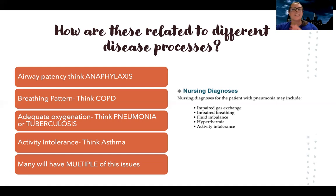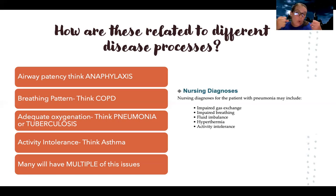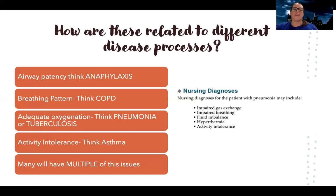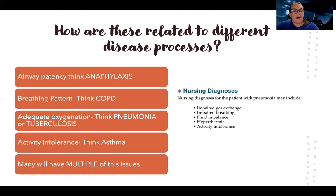Breaking it down: for airway patency, think anaphylaxis — that closed, constricted airway where nothing can get in. This isn't the only example, but it helps you connect the concept. First and foremost, before anything else, the patient must have an open airway. That should be your main priority for any patient with an airway patency problem.